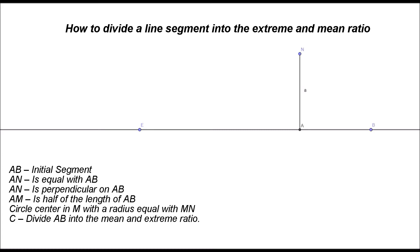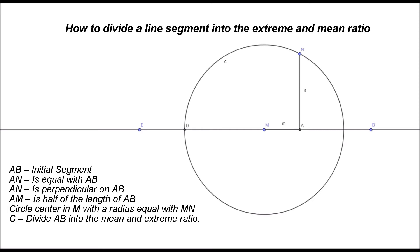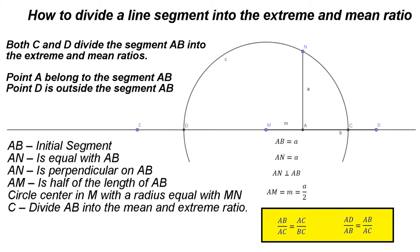First, we need to consider the segment A-N, perpendicular on A-B, and with the same length as A-B. Next, we determine the point M such that A-M is half the segment A-B. And finally, we draw a circle with the center in M and the radius M-N. The intersection between the circle and the segment A-B is the point C. This point divides the initial segment A-B into the extreme and mean ratio.